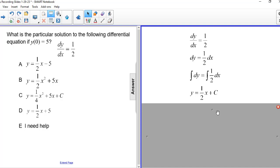But I can find the particular solution by knowing that y of 0 is equal to 5. So I replace y with 5 and x with 0, which gives me 5 is equal to 1 half times 0 plus c, or c is equal to 5.